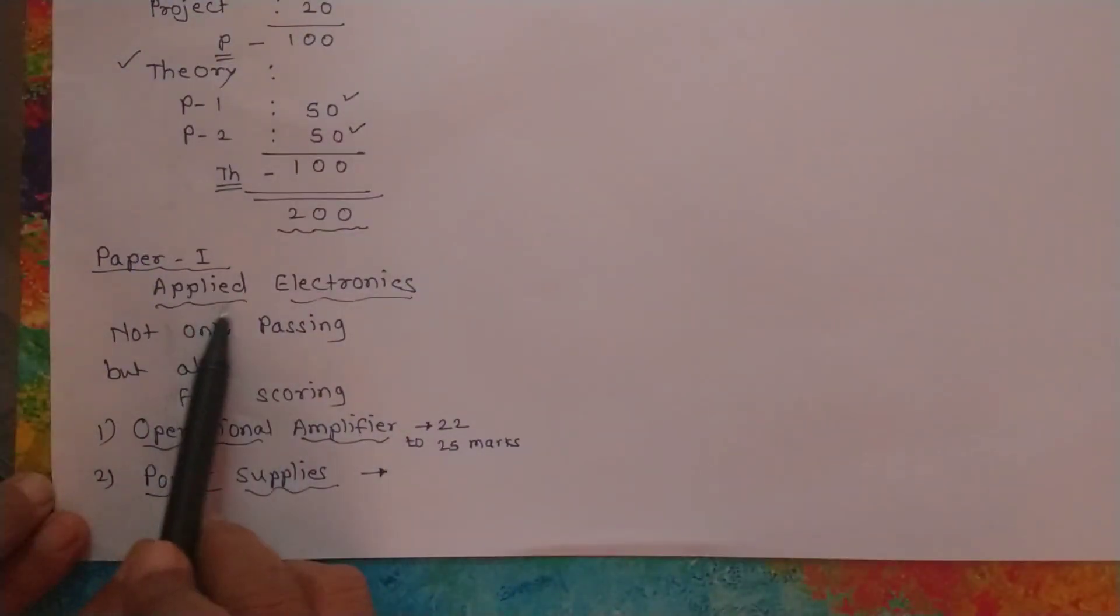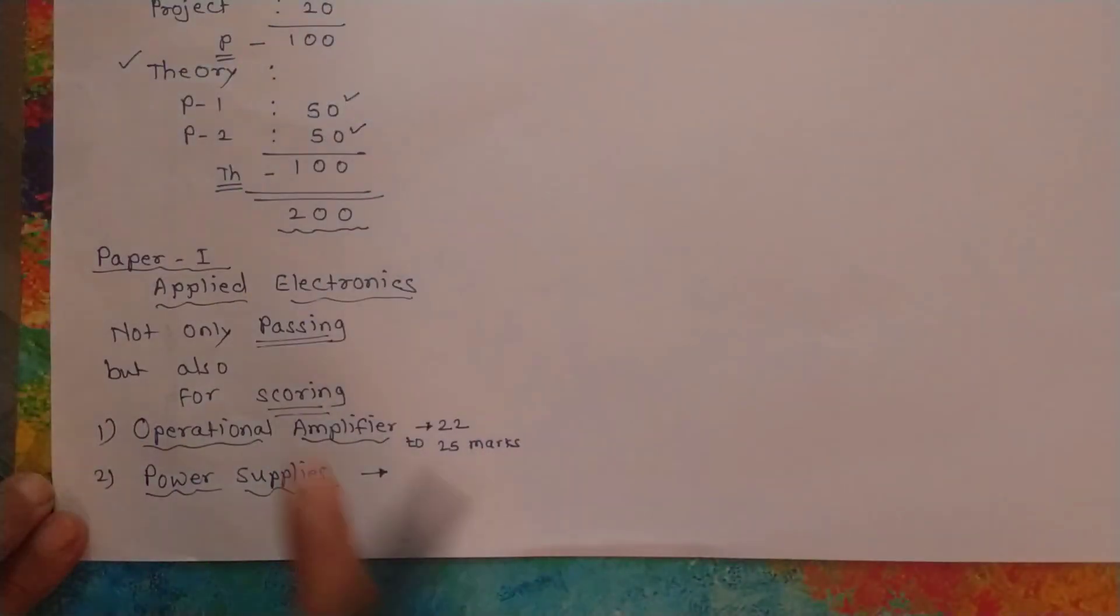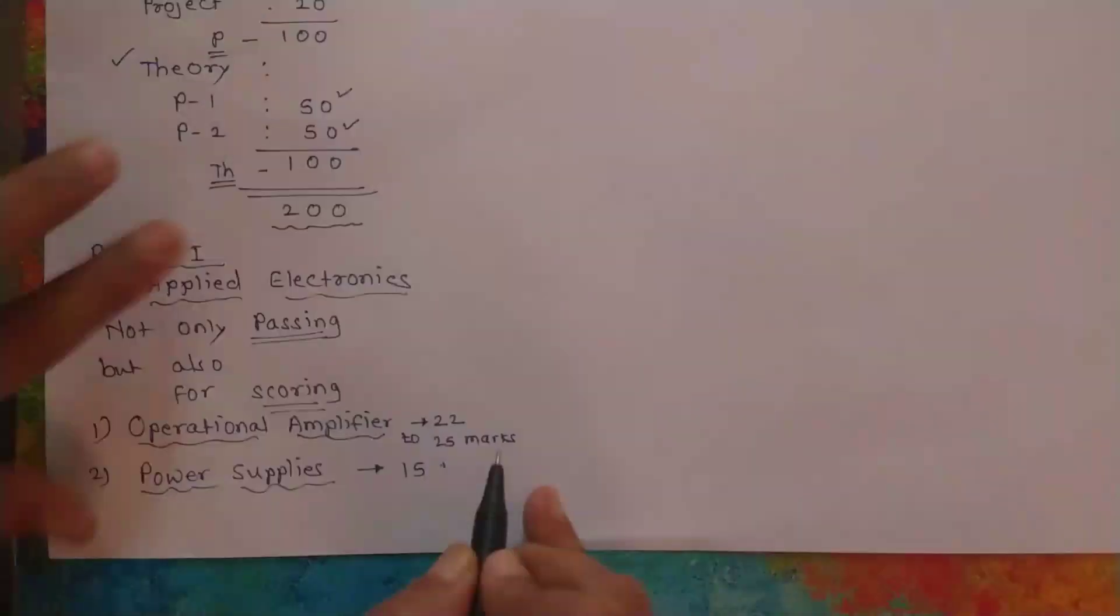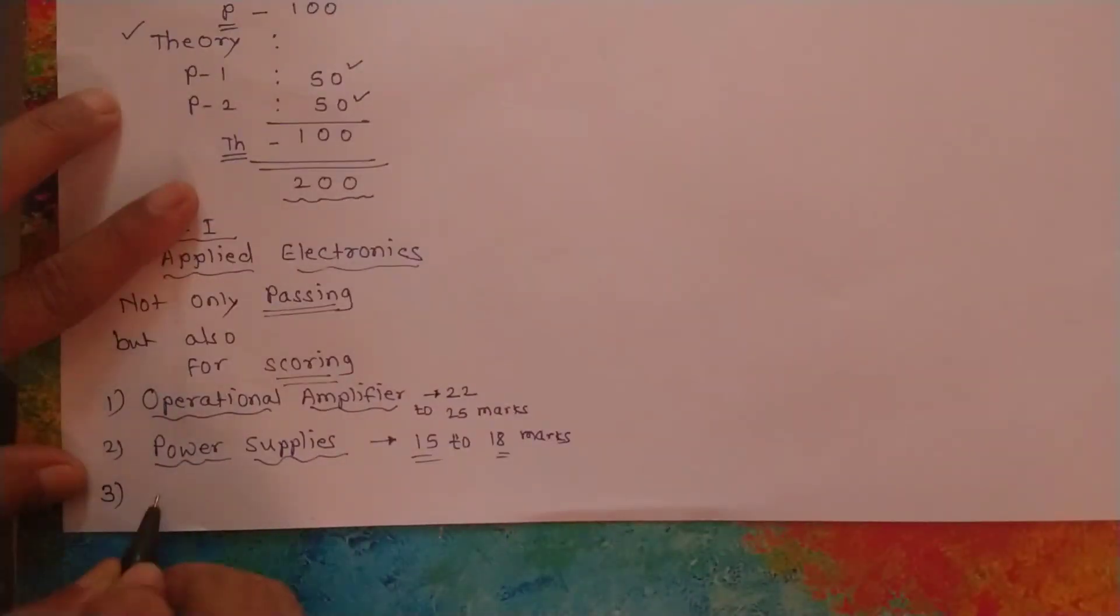For Paper 1, applied electronics, in the last 10 days you can prepare for both papers to obtain higher score or for some people even for only passing. Power supplies also carries maximum 15 to 18 marks, so if you study hard within these 10 days.